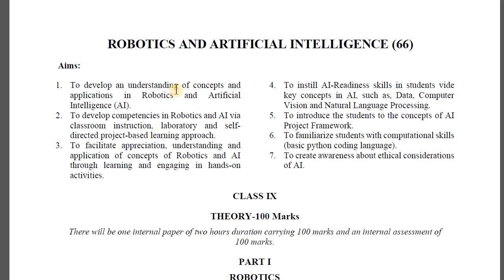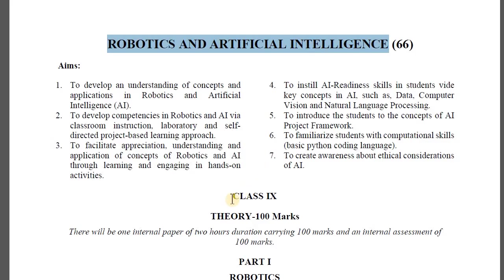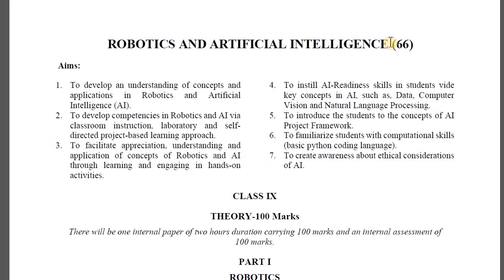Hello students. Today we are going to start the Robotics and Artificial Intelligence course for ICSE Class 9, and the course code is 66.